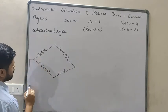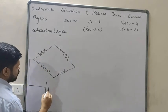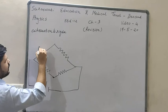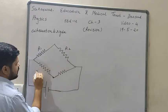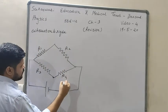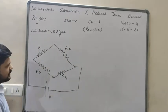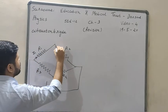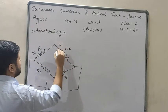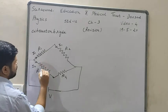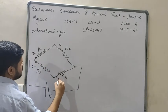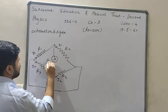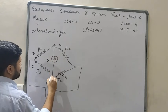This is the normal diagram of Wheatstone Bridge — R1, R2, R3, R4, battery V. Here current I1 is going in one branch, I2 in the other branch, and here there will be a galvanometer.